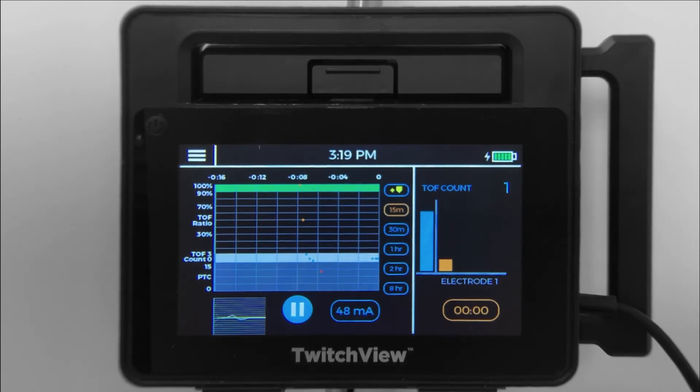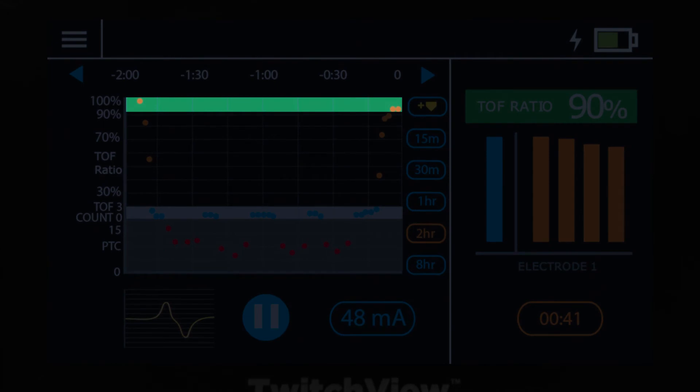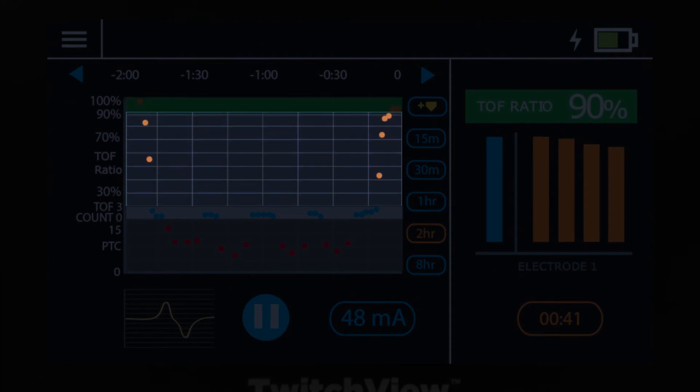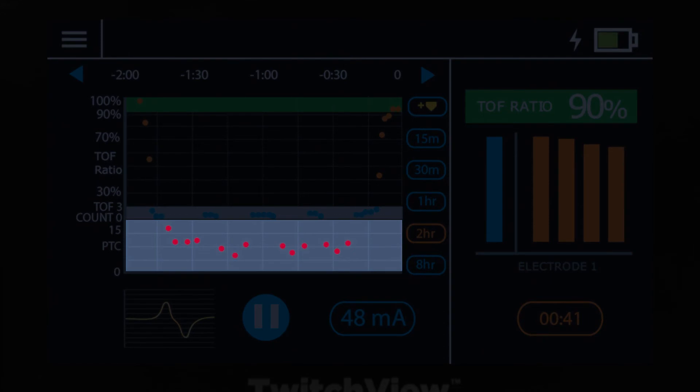In addition to real-time measurements, the TwitchView also displays a graphical representation of the patient's measurements throughout the case. Each measurement is plotted as a point on the graph. A plot in the green portion of the chart represents a TRAIN-4 ratio of 90% or greater. A point in black represents a TRAIN-4 count of 4 with a TRAIN-4 ratio below 90%, light gray represents a TRAIN-4 count between 0 and 3, and dark gray represents a post-tetanic count measurement.